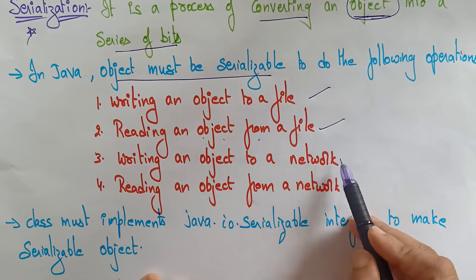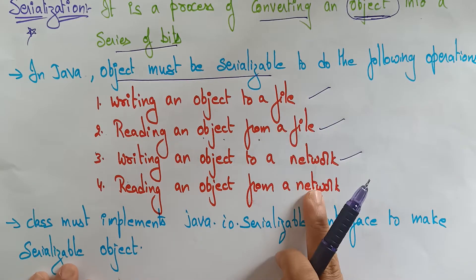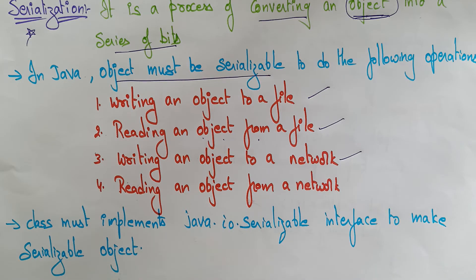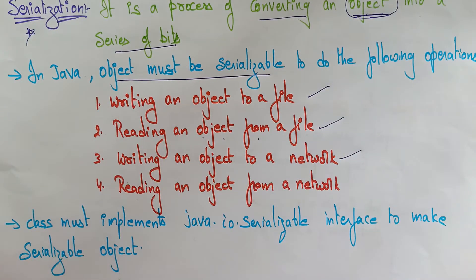Writing an object to a network — if you want to write an object not only to a file but also to a network, serialization is required. And even reading an object from a network, serialization is required. So for writing and reading an object to a file, to a network, and from a network, the serialization concept is required. Serialization is a process of converting an object into a series of bits.